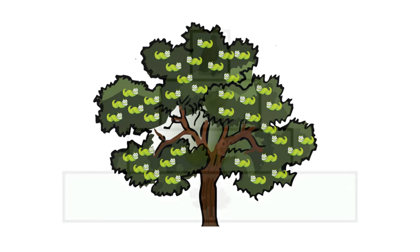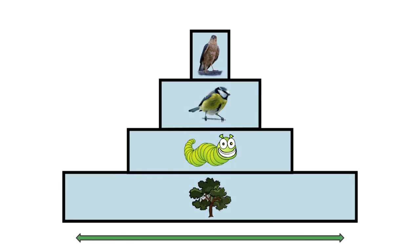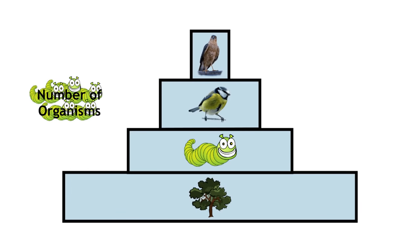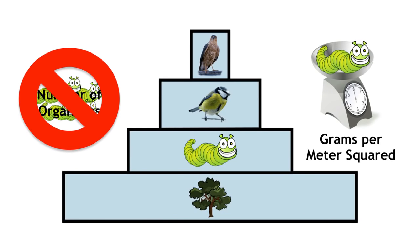Pyramids of biomass, on the other hand, are almost always largest at the bottom, and then get smaller going up. This is because, rather than showing the number of organisms, they show the total mass in that trophic level.